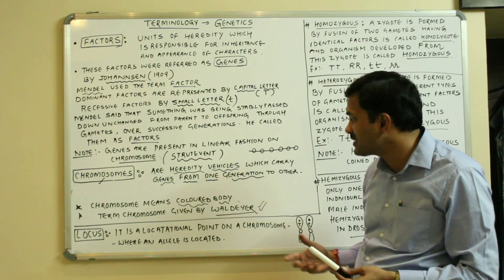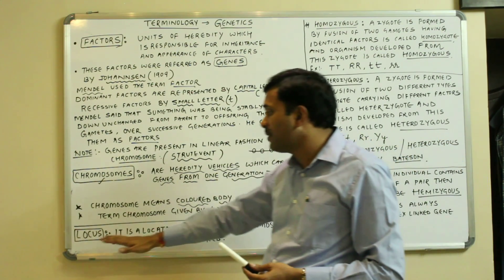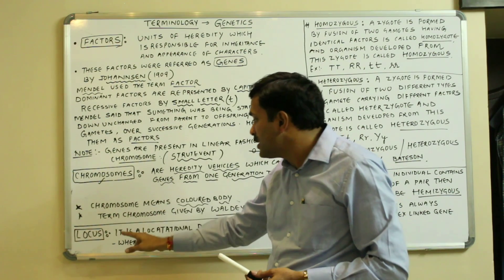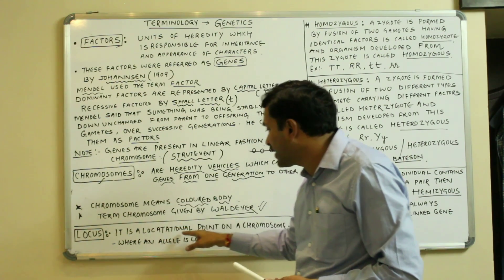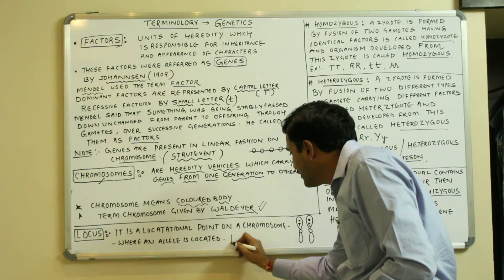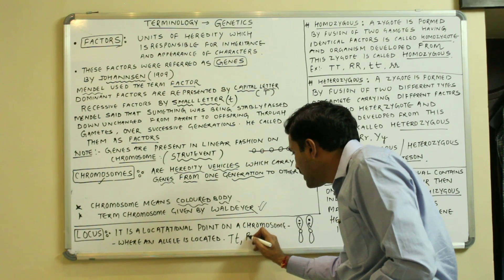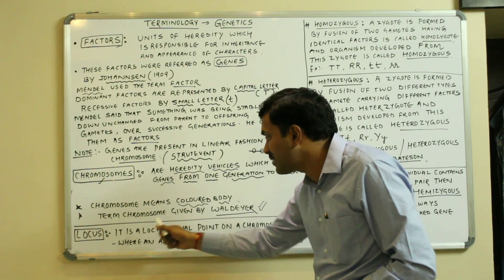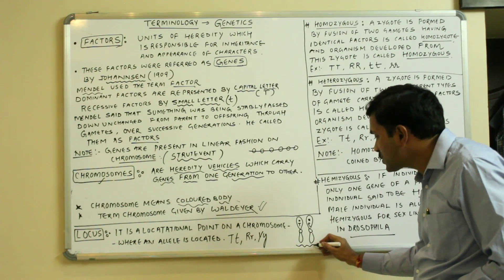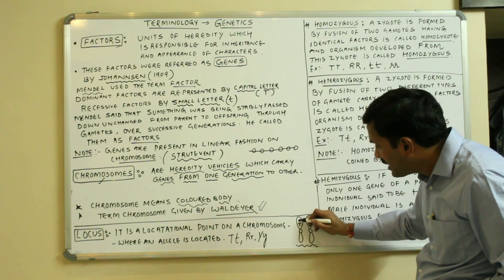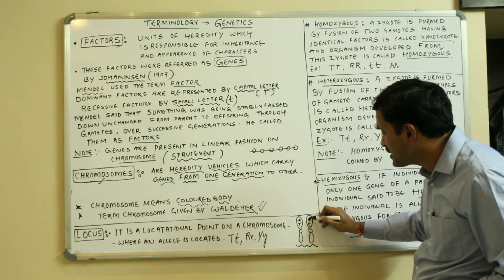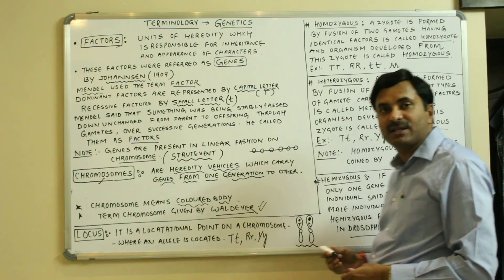Now, locus. We know that on chromosomes, genes are present. A locus is a locational point on a chromosome where an allele is located. For example, there are different alleles: capital T, small t, capital R, small r, capital Y, small y. If this is a homologous chromosome, this point represents a locus having the allele T, and this point represents the locus having the small t.